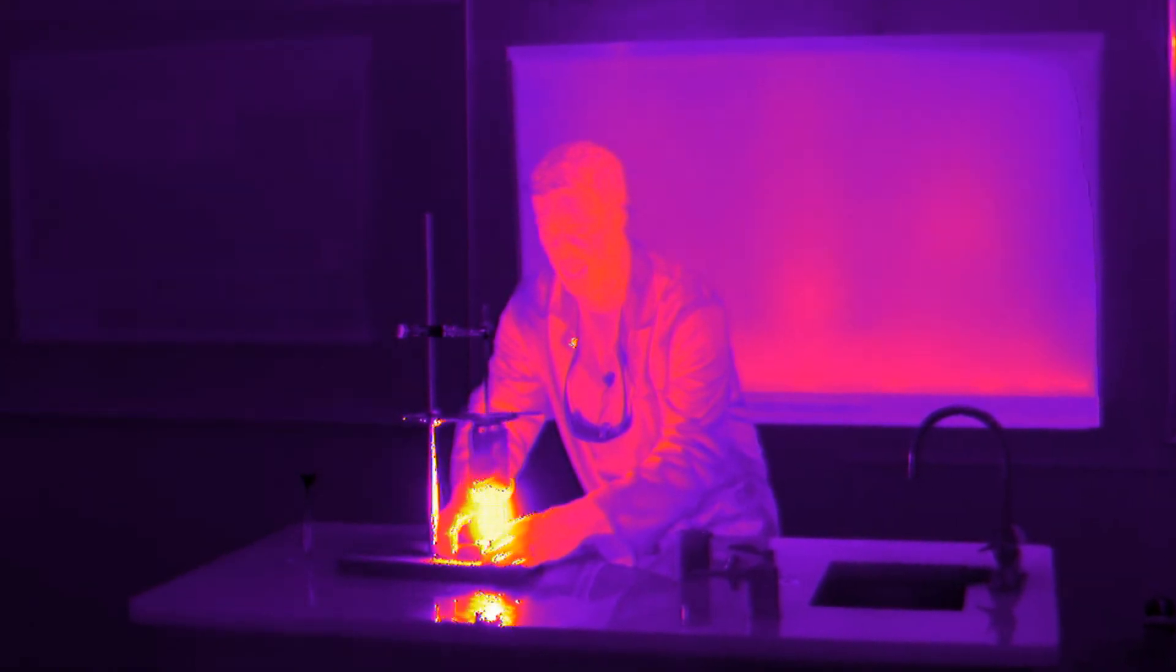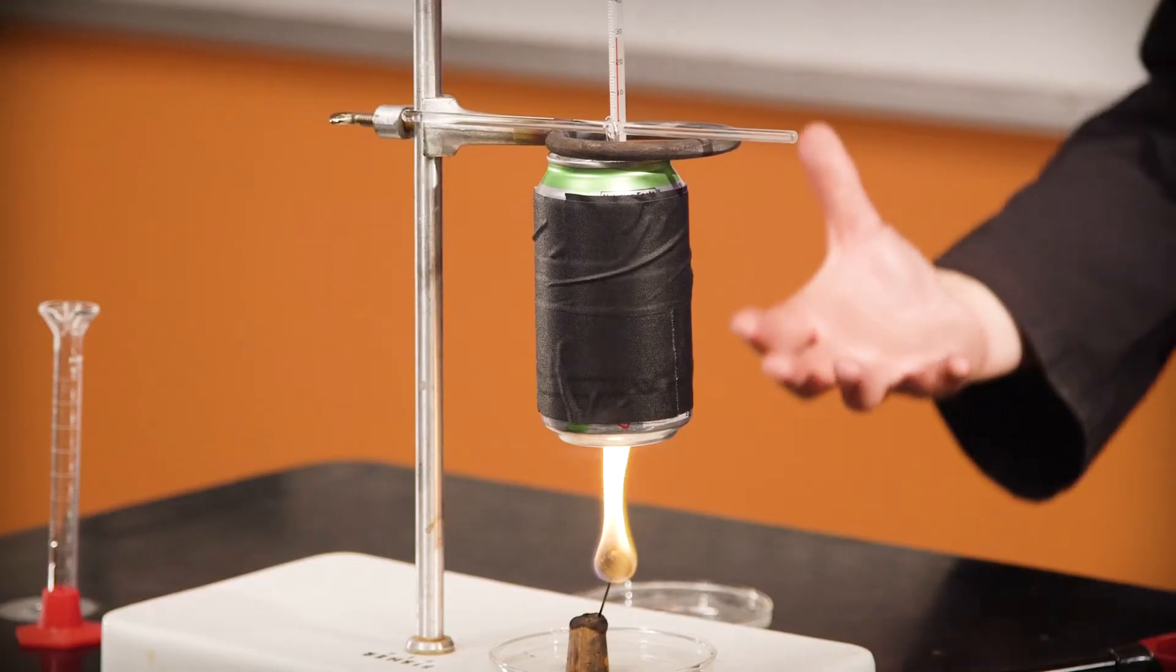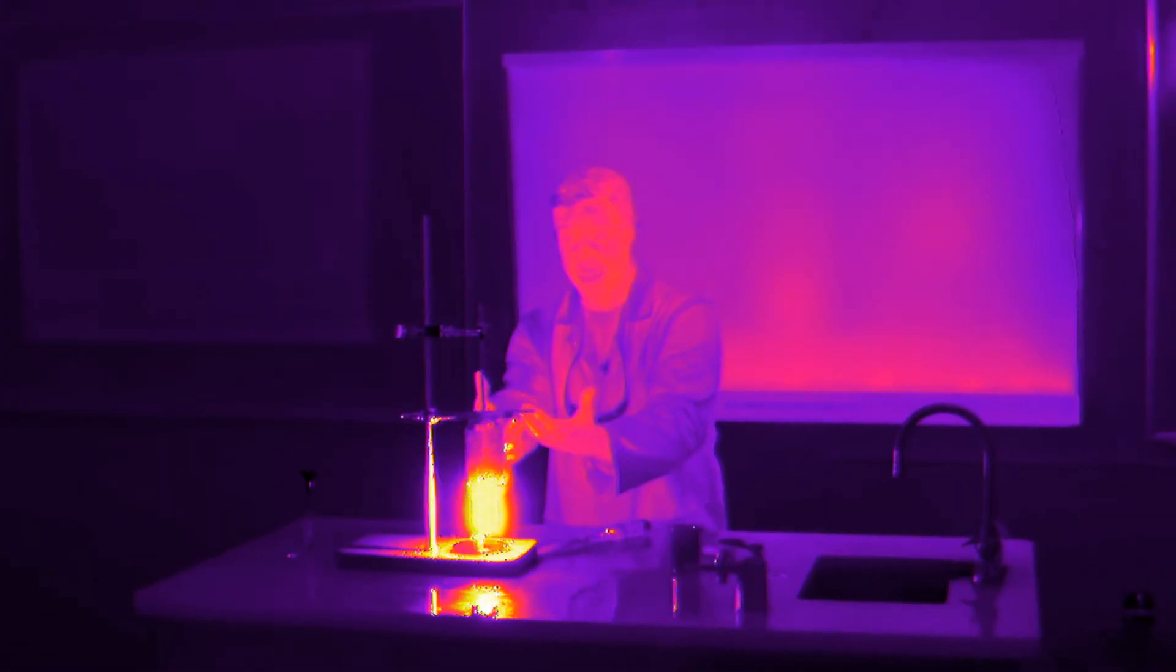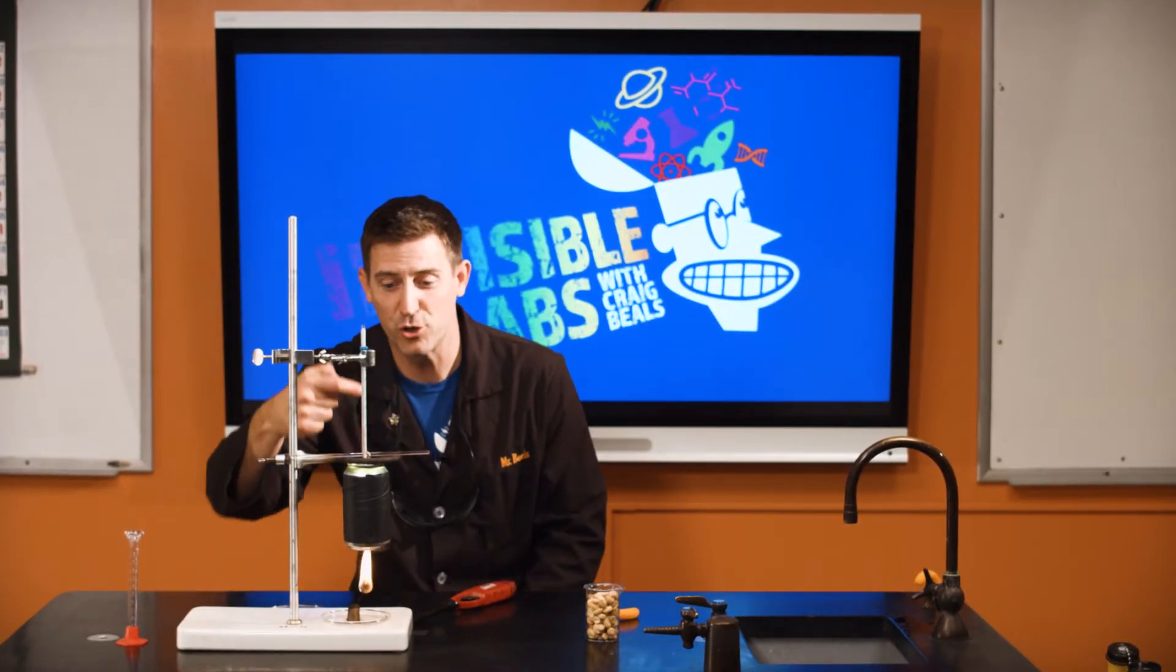This is my homemade calorimeter for measuring calories at home. Now look at this. All of that heat is going up into the can. It's heating up the water. We're gonna see the temperature change right here.